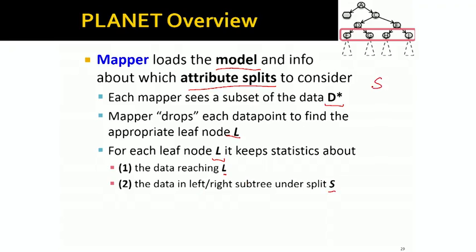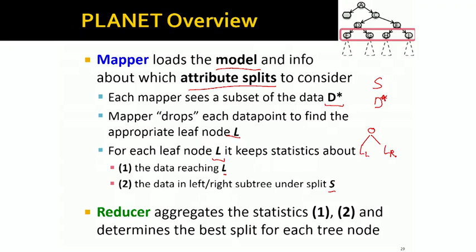So the mapper sees a set of splits S, sees a subset of our data set, and then for each leaf node, it keeps track of which data goes to the left of the leaf node and what data goes to the right of that given leaf node. And then, as I mentioned, reducer will take all this partial information, combine it, and determine the best split for each node in the tree at the given level that we are currently building.